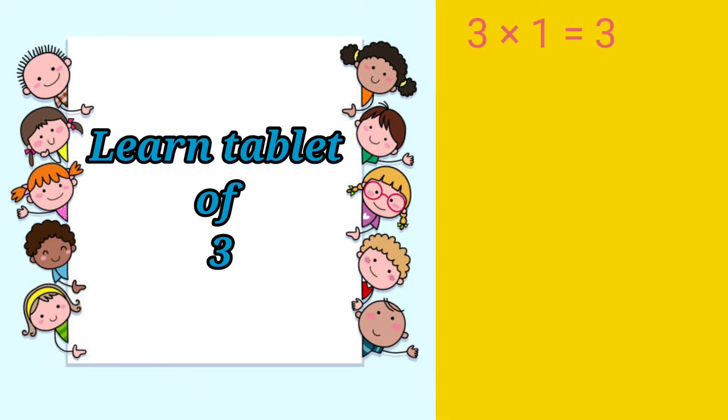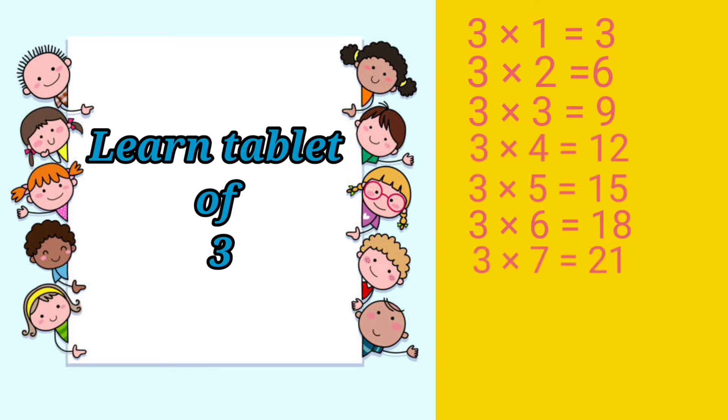Learn table of 3. 3 1s are 3. 3 2s are 6. 3 3s are 9. 3 4s are 12. 3 5s are 15. 3 6s are 18. 3 7s are 21. 3 8s are 24. 3 9s are 27. 3 10s are 30.